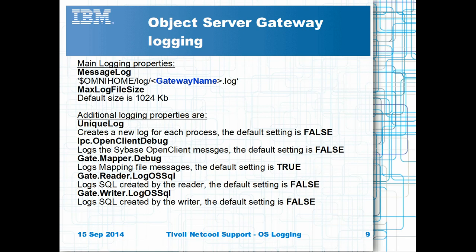The Object Server Gateways have a number of properties to control logging behaviour. Log files are only 1MB by default and named according to the gateway's given name. Only the mapping Debug Logging is enabled by default. You can enable Debug Logging for Open Clients Reader and Writer SQL Logging. You can use the unique Log property to capture logs where the gateway exits suddenly and is being restarted by process control.